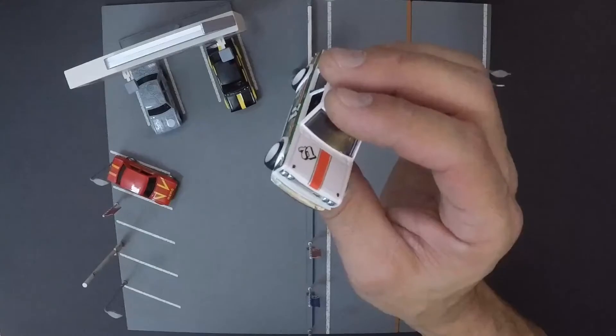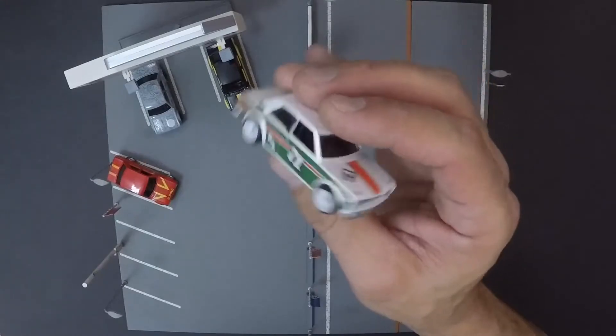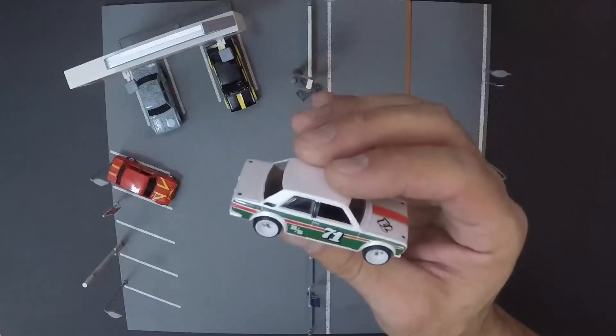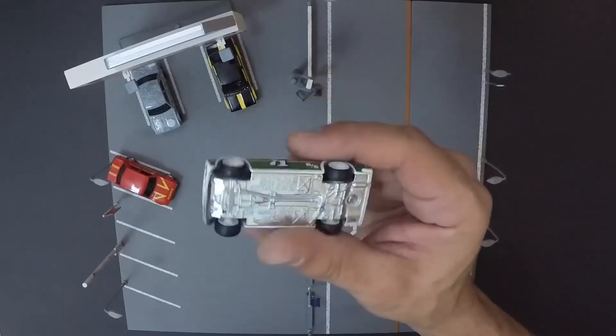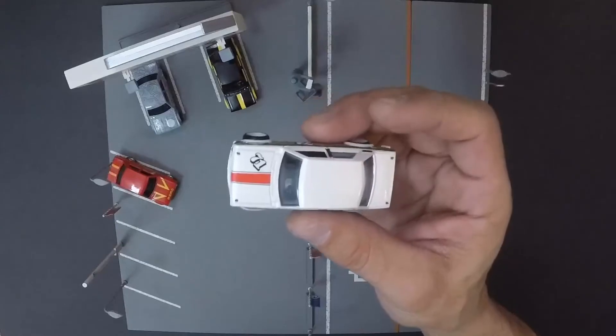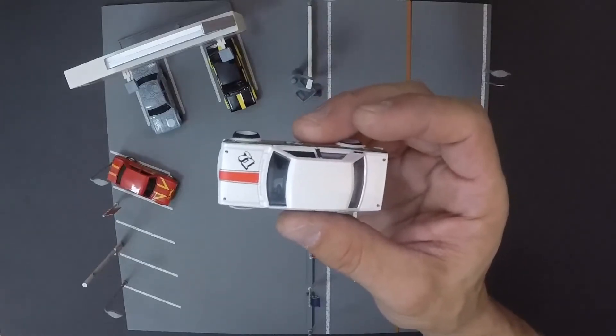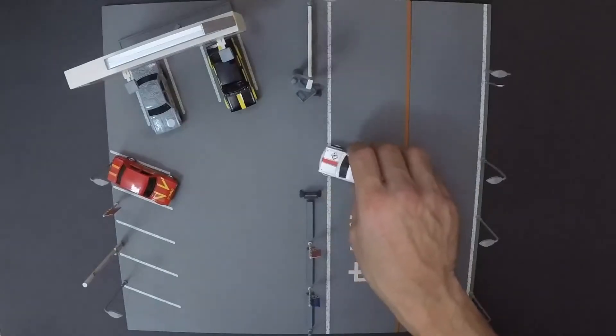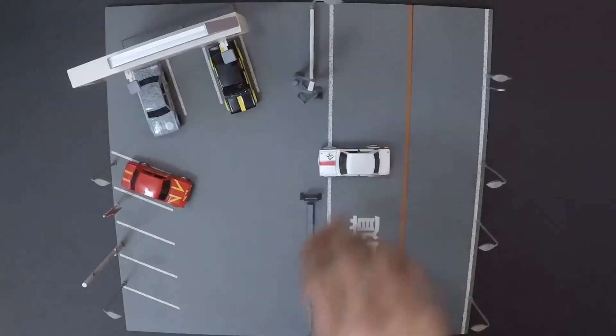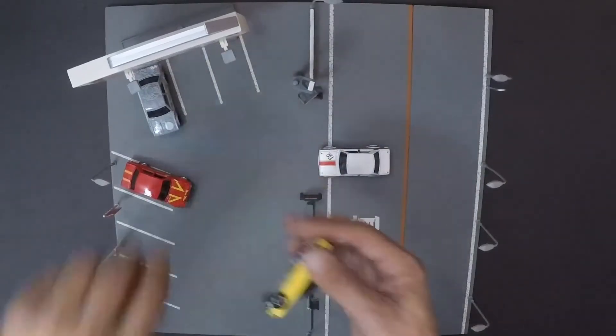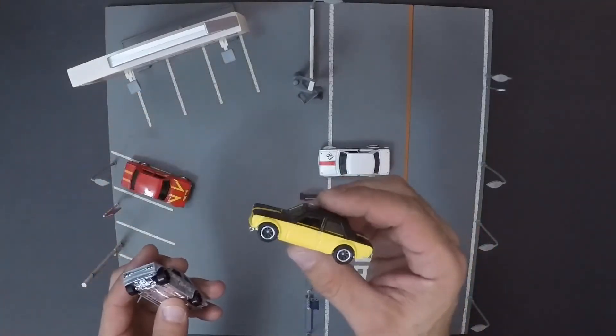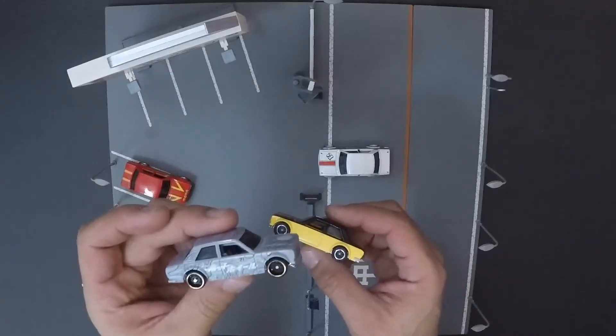I have a couple other Datsuns here that have the same setup, and one of them is the mainline Momo from 2019. Let's put this down. So I have these two right here - this one came from the display case and this is from the new car meet five pack in stores now. You can also get it online.